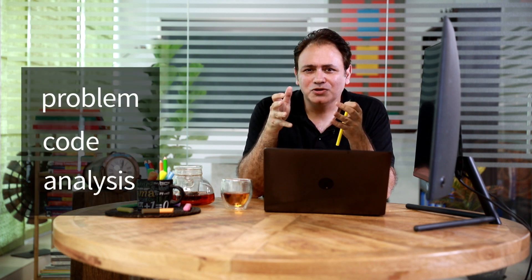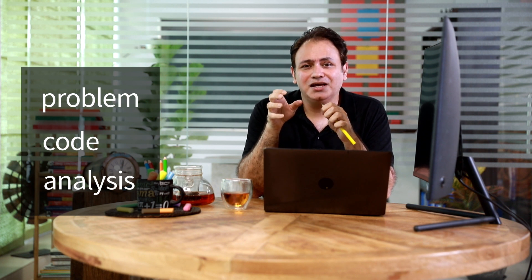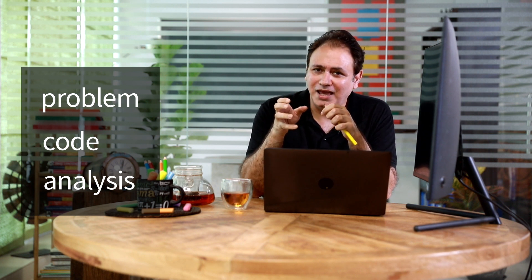So essentially what have we done so far? We outlined the problem. We coded it up, we played around a little bit with it, we got the right solution and then we said, what's the efficiency of this algorithm? And essentially we are saying that it is order n.